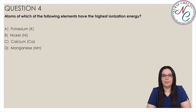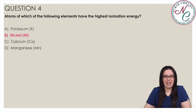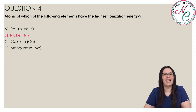Atoms of which of the following elements have the highest ionization energy? Is it A Potassium, B Nickel, C Calcium, or D Manganese? And the correct answer is B Nickel. Ionization energy increases as you move from left to right across the period or row of the table. Nickel is the element located the farthest to the right of the four elements mentioned, which lies on the fourth row of the periodic table. Nickel therefore has the highest ionization energy.